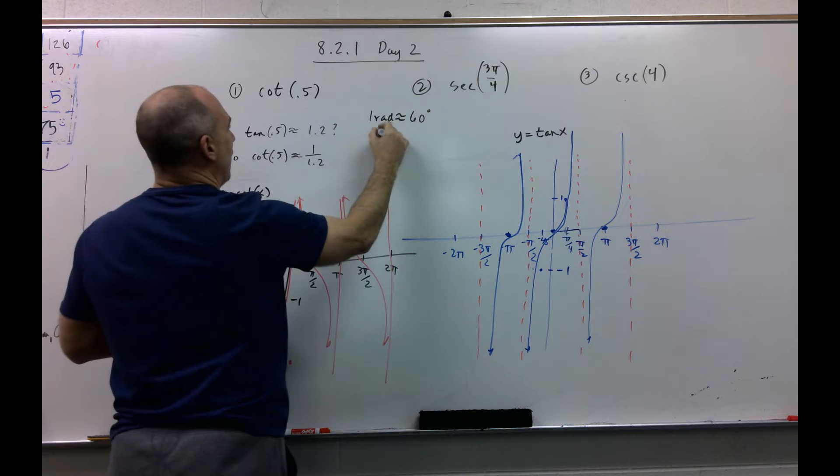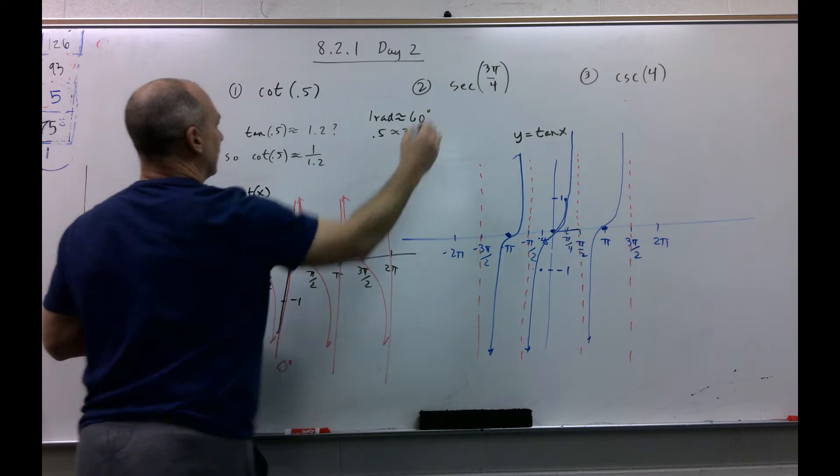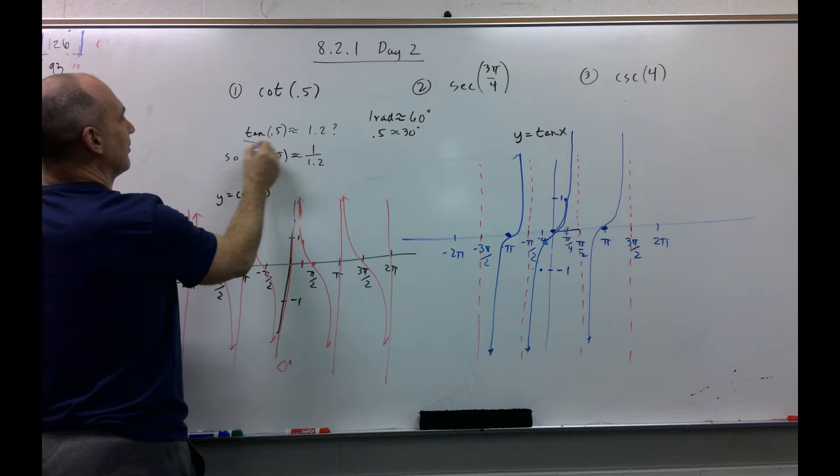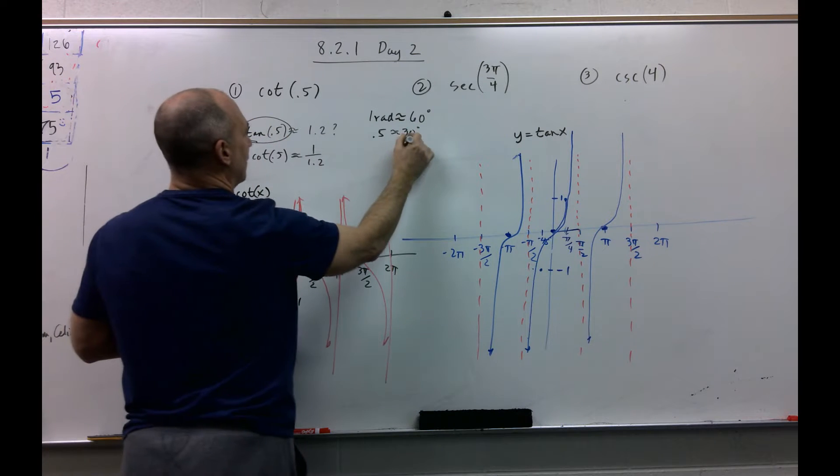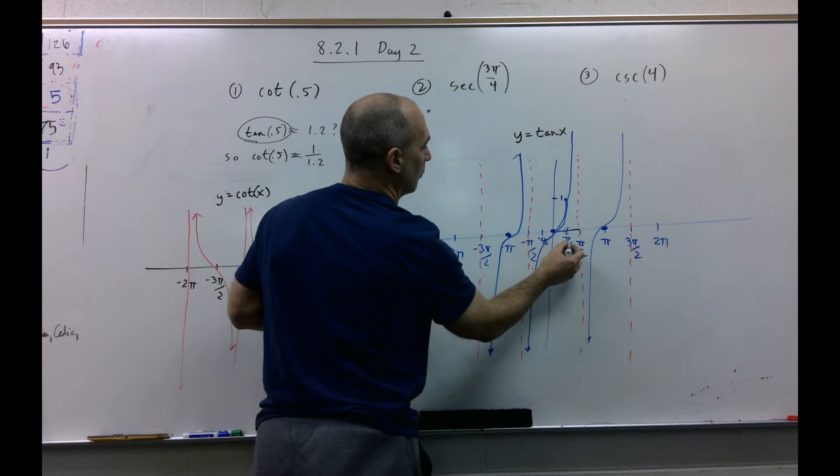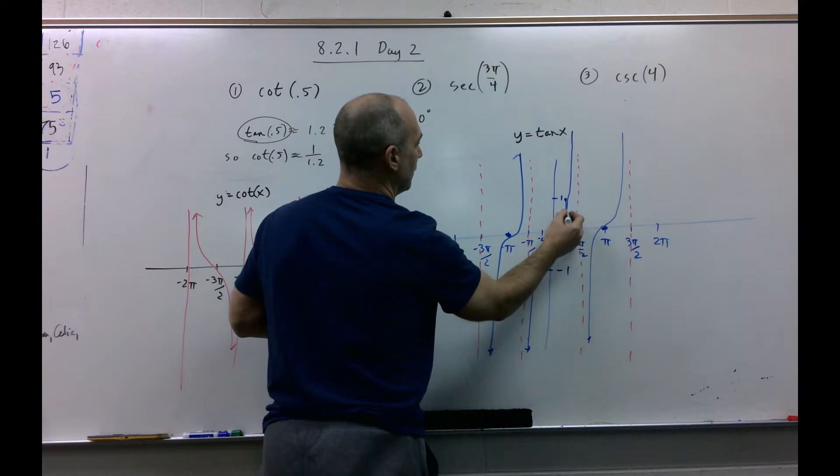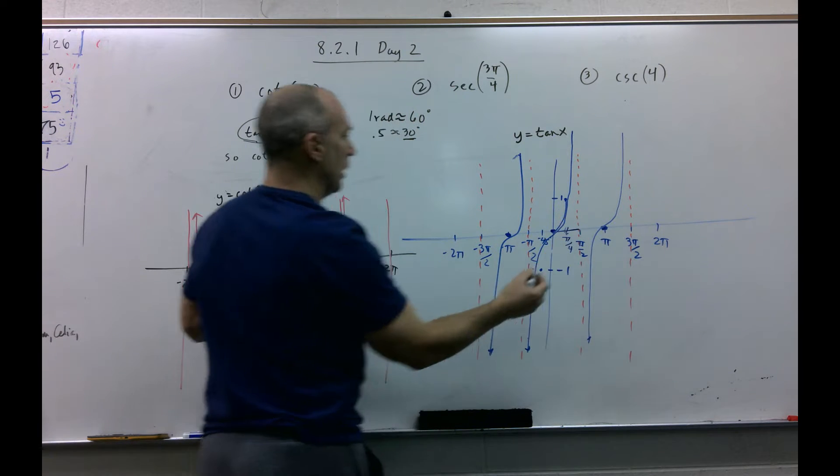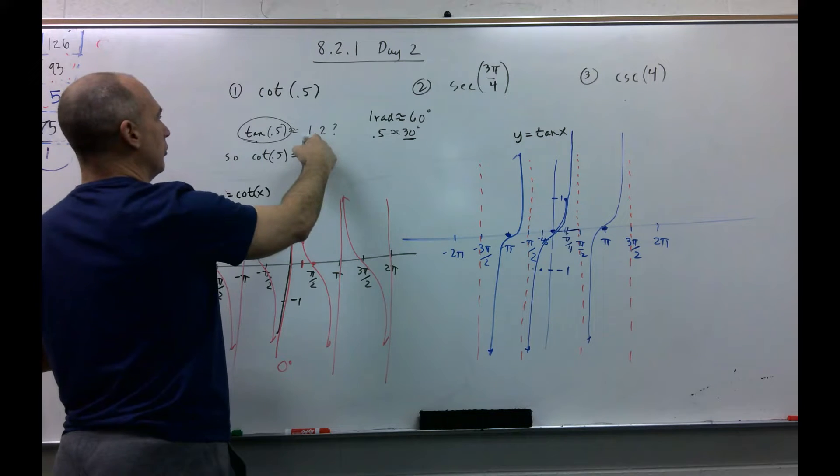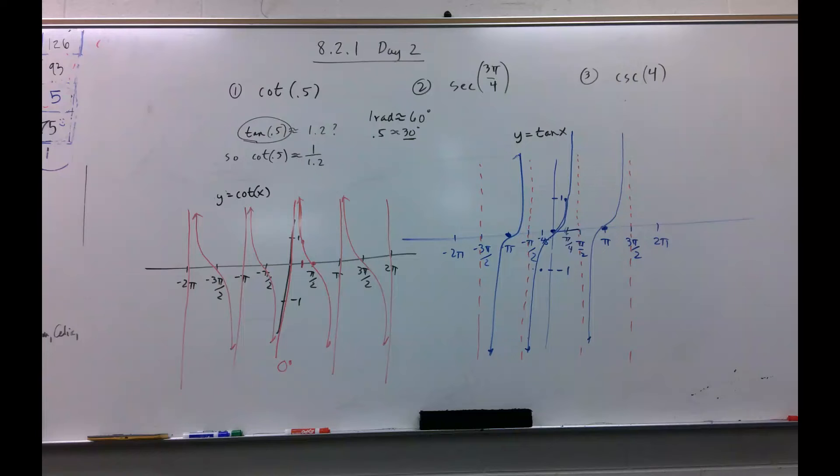One radian is approximately 60 degrees. So 0.5 radians would be approximately 30 degrees. So what is tangent of approximately 30 degrees? Well, if we go over to our tangent graph, we know this is 45, so 30 would be right in here somewhere, and that would take us up in here somewhere.